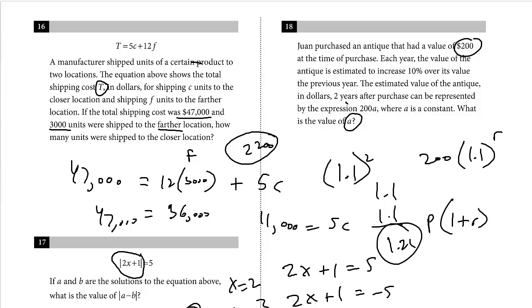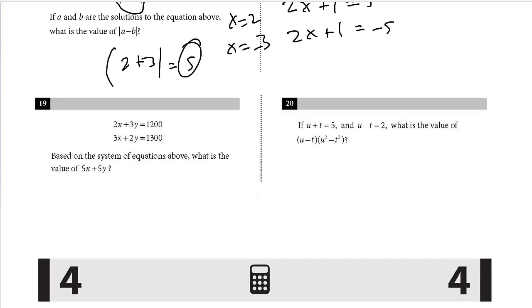The last two problems. Number 19: 2x plus 3y equals 1,200. 3x plus 2y equals 1,300. Based on the system of equations, what's the value of 5x plus 5y? This is a surprisingly easy problem because they're not asking us to find the solutions. They're just asking for a quantity. But you should recognize if you just add the two together, you get what we're solving for. We just add the two together: 5x, 5y. We just add the two constants together, and it's 2,500. That's a really straightforward question. I was kind of surprised it was number 19.